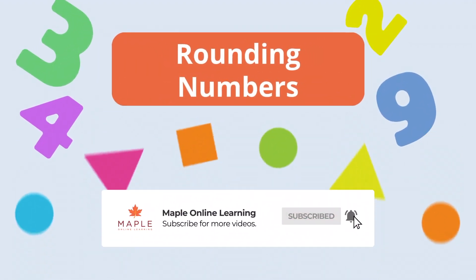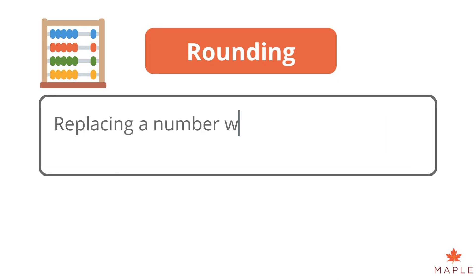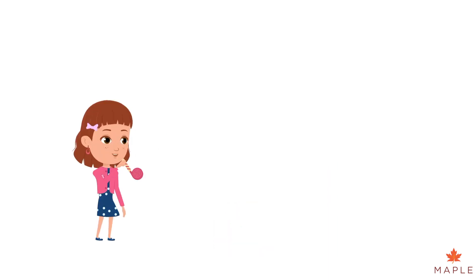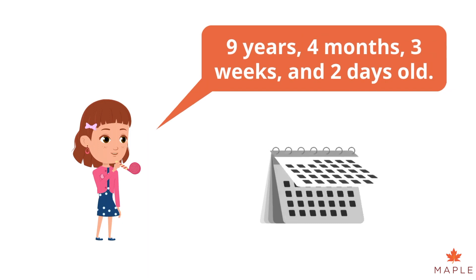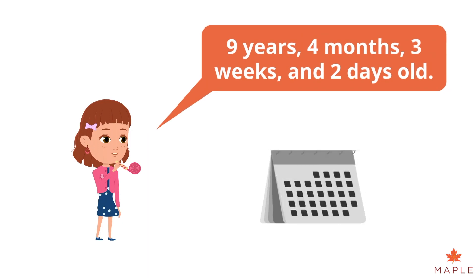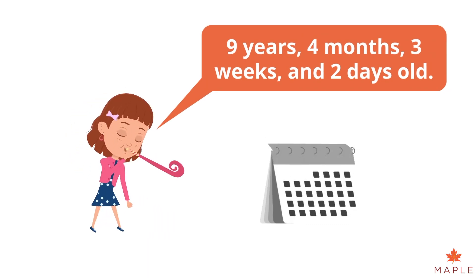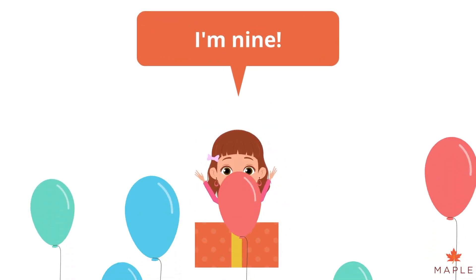Rounding numbers. Rounding means replacing a number with an approximate value, so it is simpler and easier to use. So instead of telling your new friend that you are nine years, four months, three weeks and two days old, which is your real, accurate age, you simply say you are nine years old.